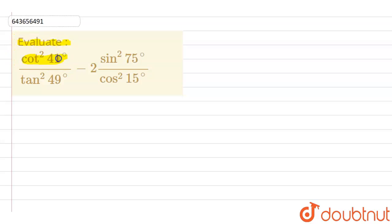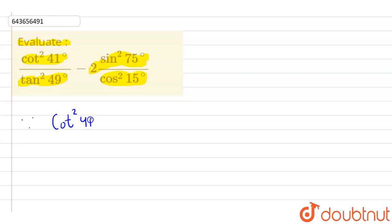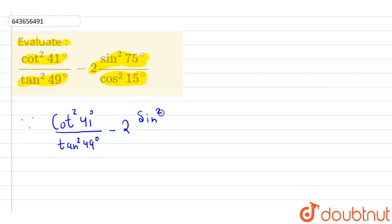...cot squared 41 degrees upon tan squared 49 degrees, minus 2 into sine squared 75 degrees upon cos squared 15 degrees. Basically, in this question we have been given this expression which we need to evaluate. So first of all, let us write the expression: we have to evaluate cot squared 41 degrees upon tan squared 49 degrees, minus 2 into sine squared 75 degrees upon cos squared 15 degrees.